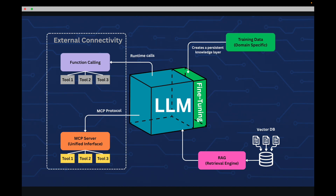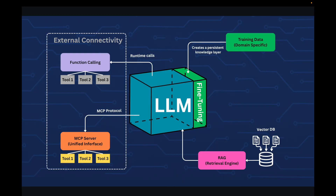Let's recap when to use which method. When you want to train your model with specialized persistent knowledge, use fine-tuning. When you need real-time actions and external data, use function calling. If you want to reuse integrations with multiple LLMs or open-source your tools so people can use them with any LLM, use MCP. And if you need access to a large knowledge base that frequently changes, RAG is your option. These methods are not mutually exclusive — you can combine them. A production AI system might use fine-tuning for domain expertise, RAG for knowledge access, and MCP for standardized tool integration.